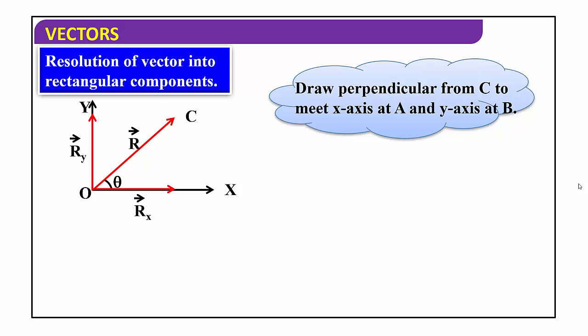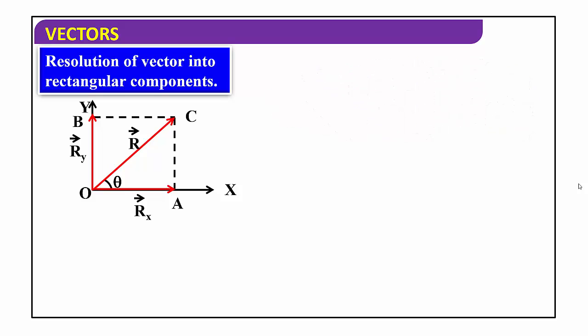Let us draw perpendicular lines from point C. Observe the diagram — from C, we draw a line perpendicular to the x-axis at point A, and perpendicular to the y-axis at point B. We considered a given vector r divided into two components: one along the x-axis which is Rx, and another along the y-axis which is Ry. When we combine Rx and Ry, that gives the original vector r.